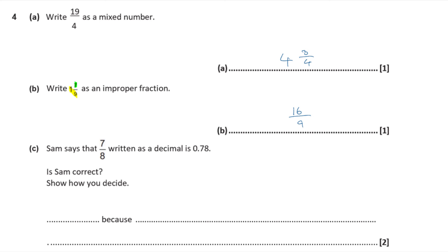Sam says that seven eighths written as a decimal is not 0.78. Is Sam correct? Show how you decide. Let's try long division. Eights into 7 don't go — zero. Eights into 70 go eight times, remainder six. Eights into 60 go seven times, remainder four. Eights into 40 go five times. So it's 0.875, not 0.78. So Sam is correct — seven eighths equals 0.875.